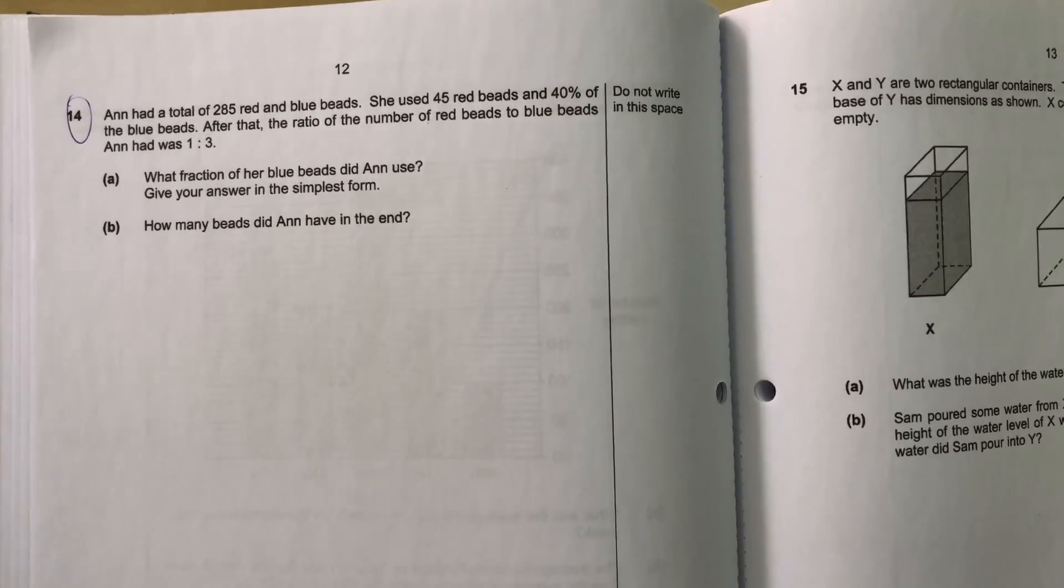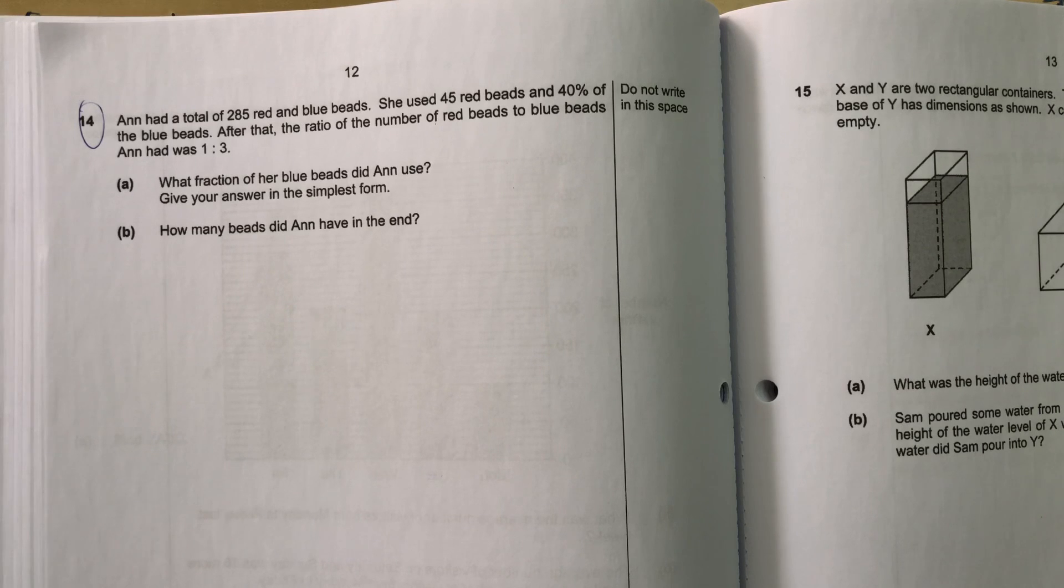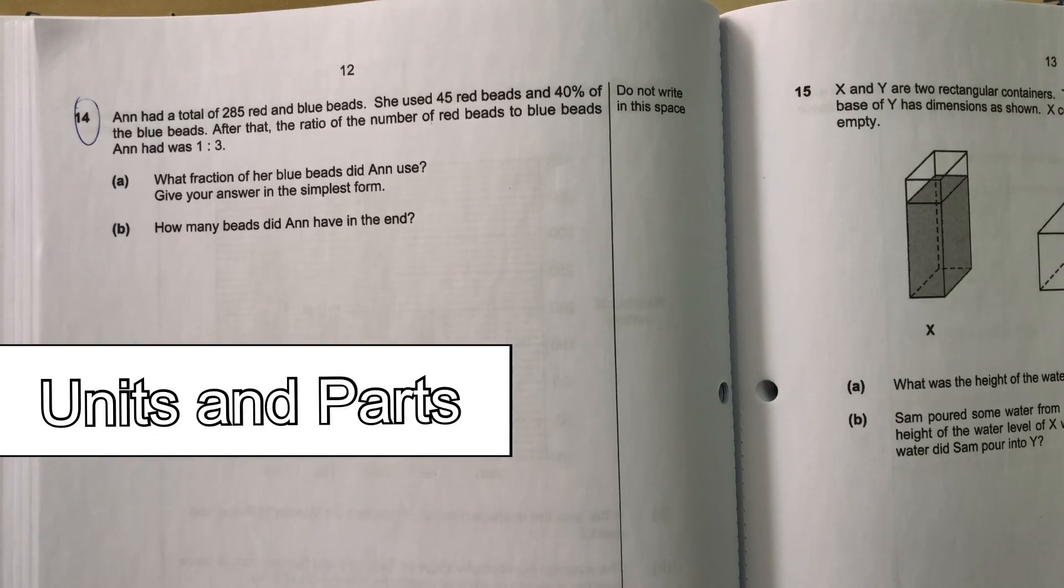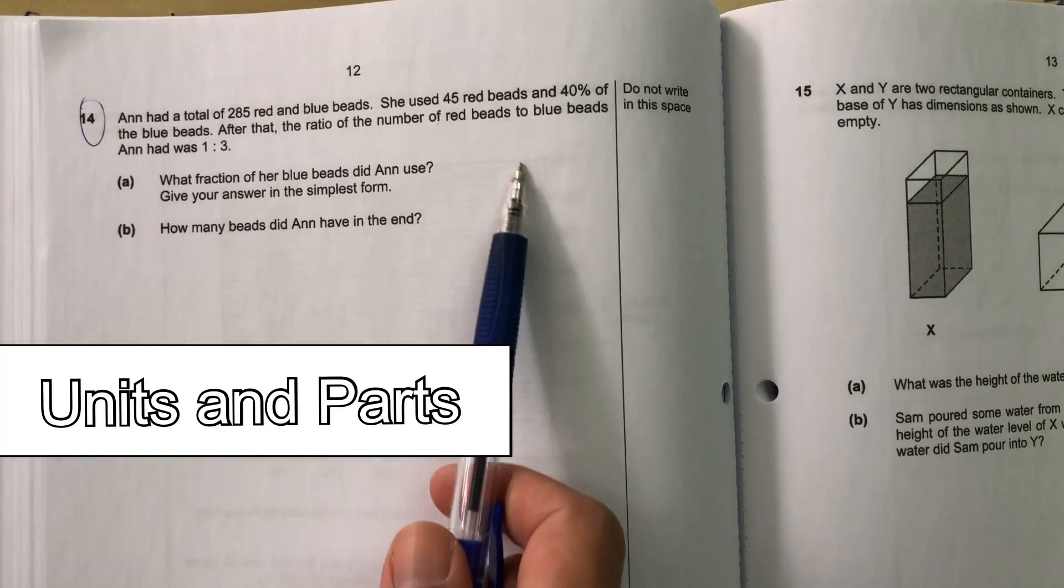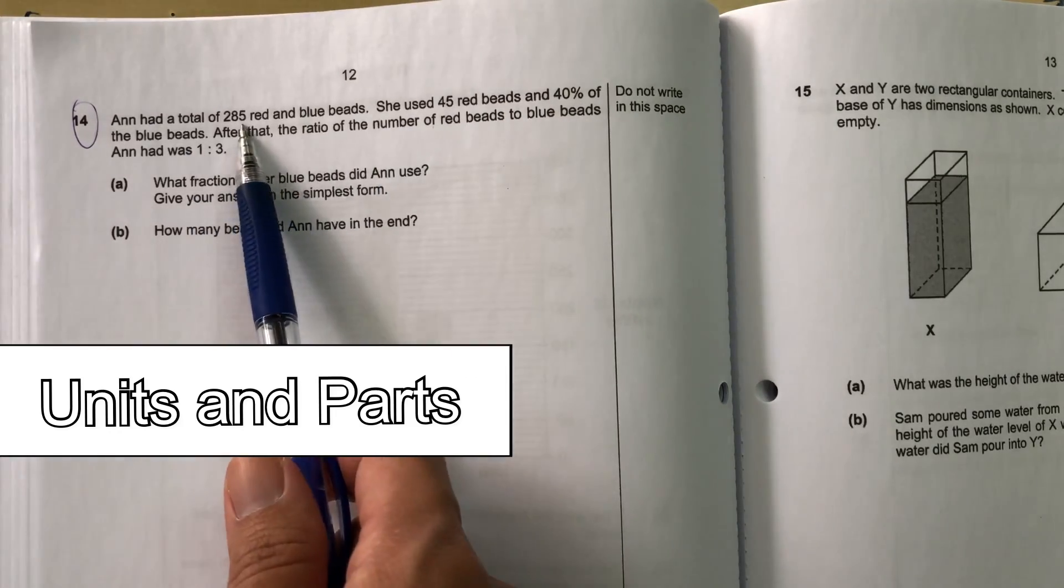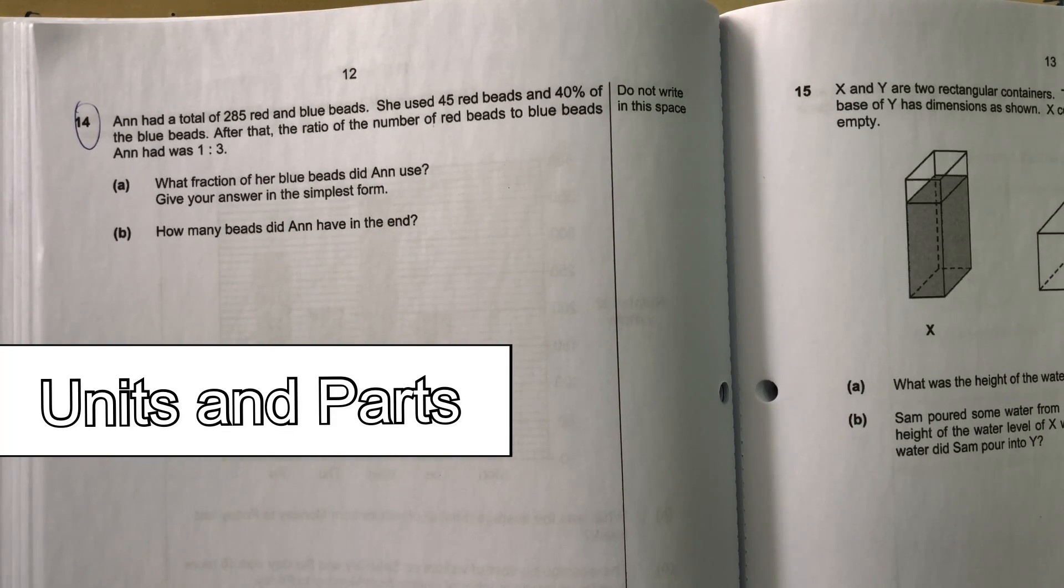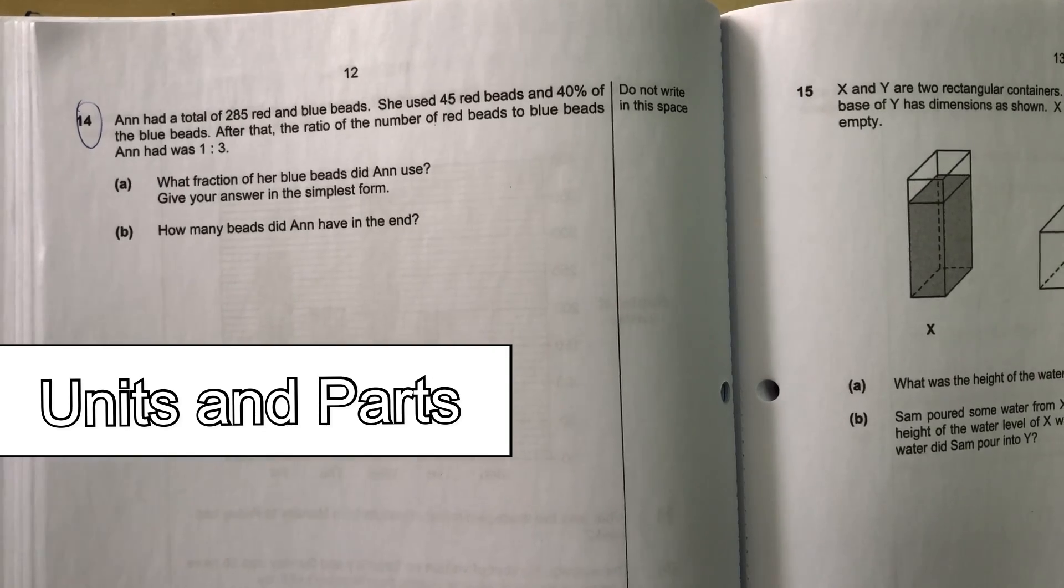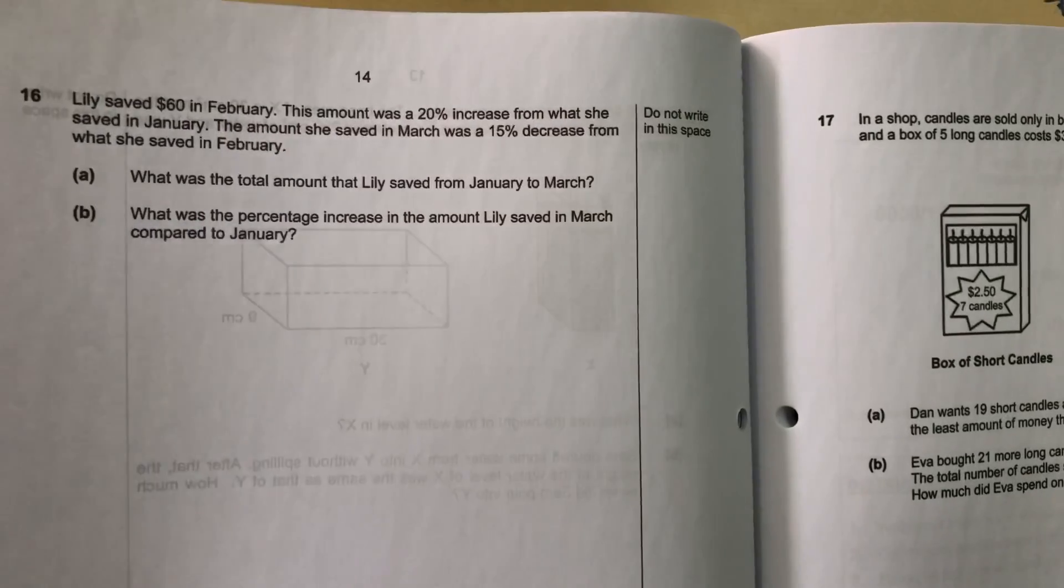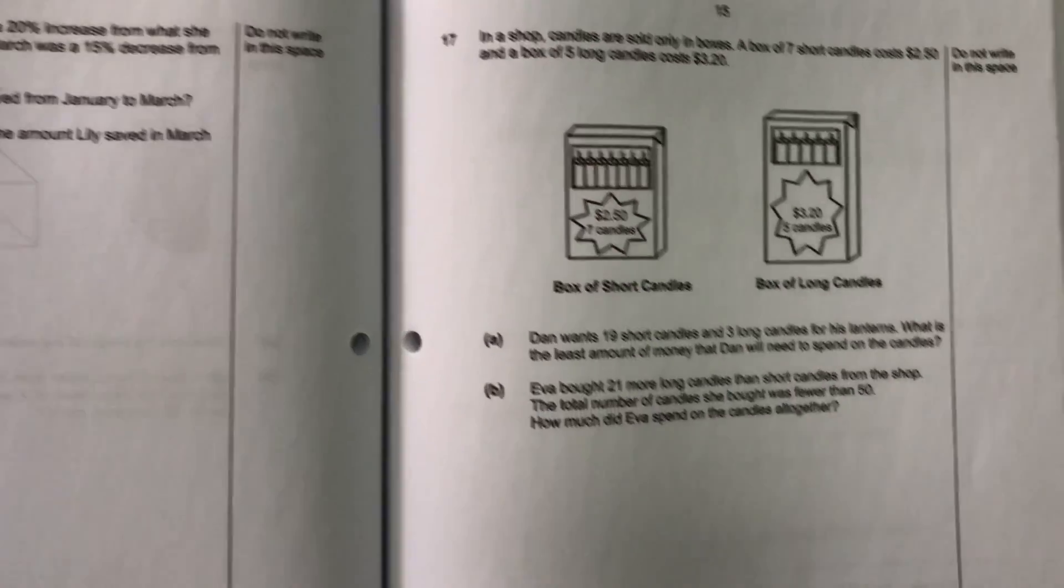One heuristic that I saw is over here, the end question. 285 red and blue beads use 45 red, 40% of the blue after that are before and after. This is a before and after units and parts. Why units and parts? Because use 45 red, 40% of the blue. So, both have changed. At first, you have a total number, but you use both. So, this is a units and parts. Before and after, one of the most difficult type of before and after to do. And that's actually the most difficult one.